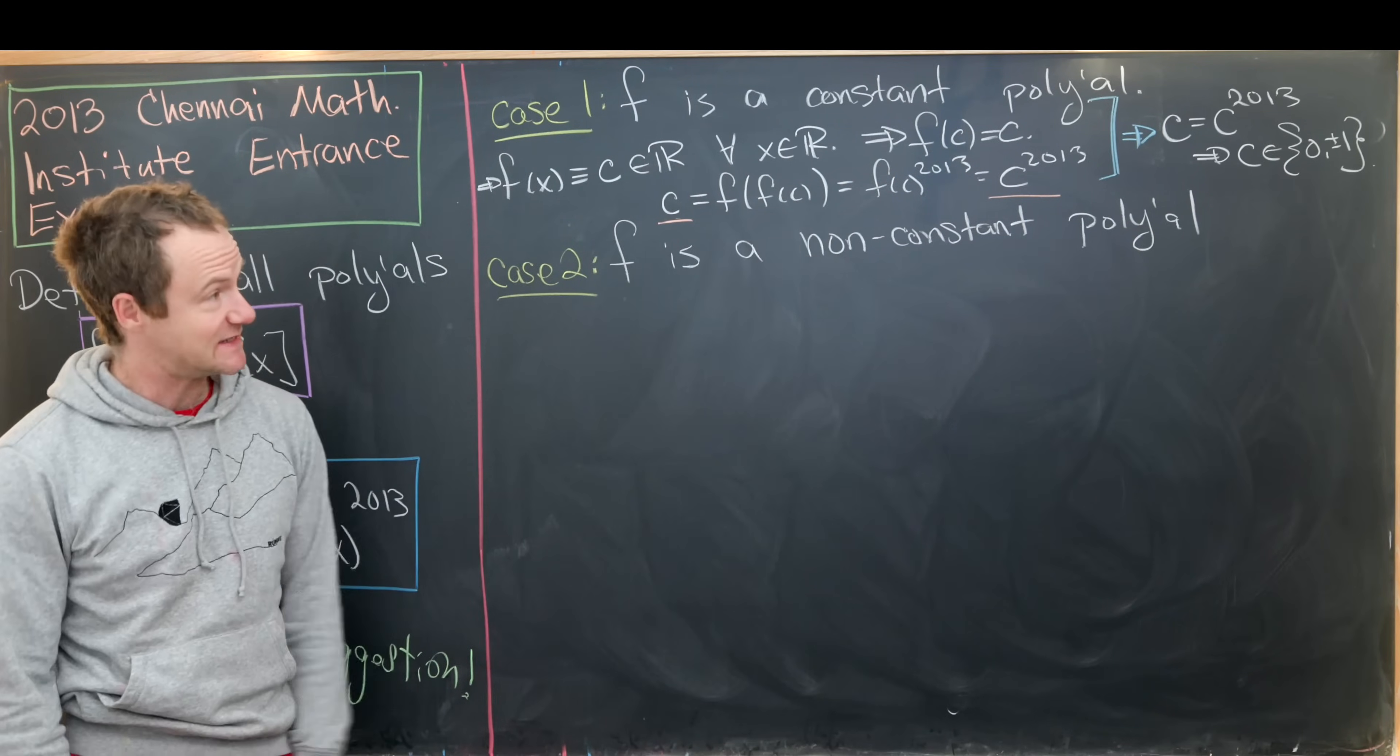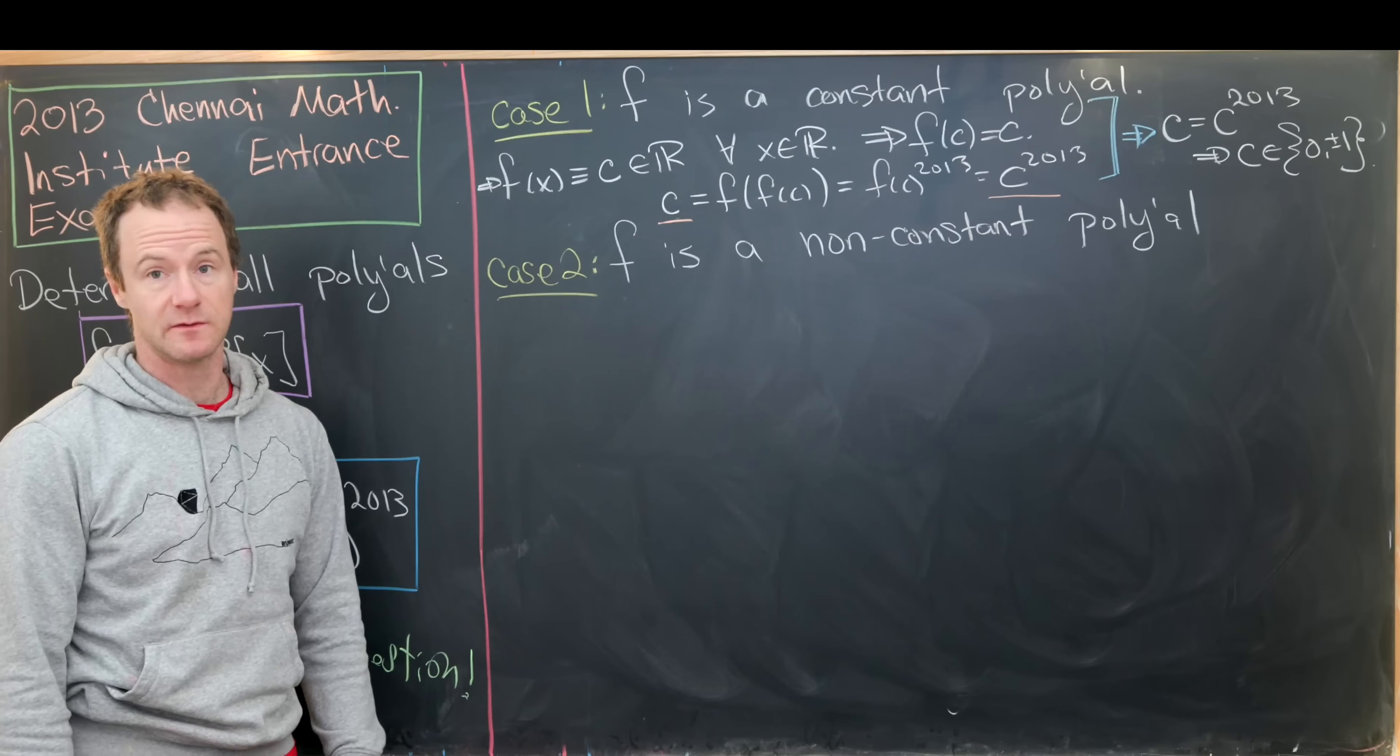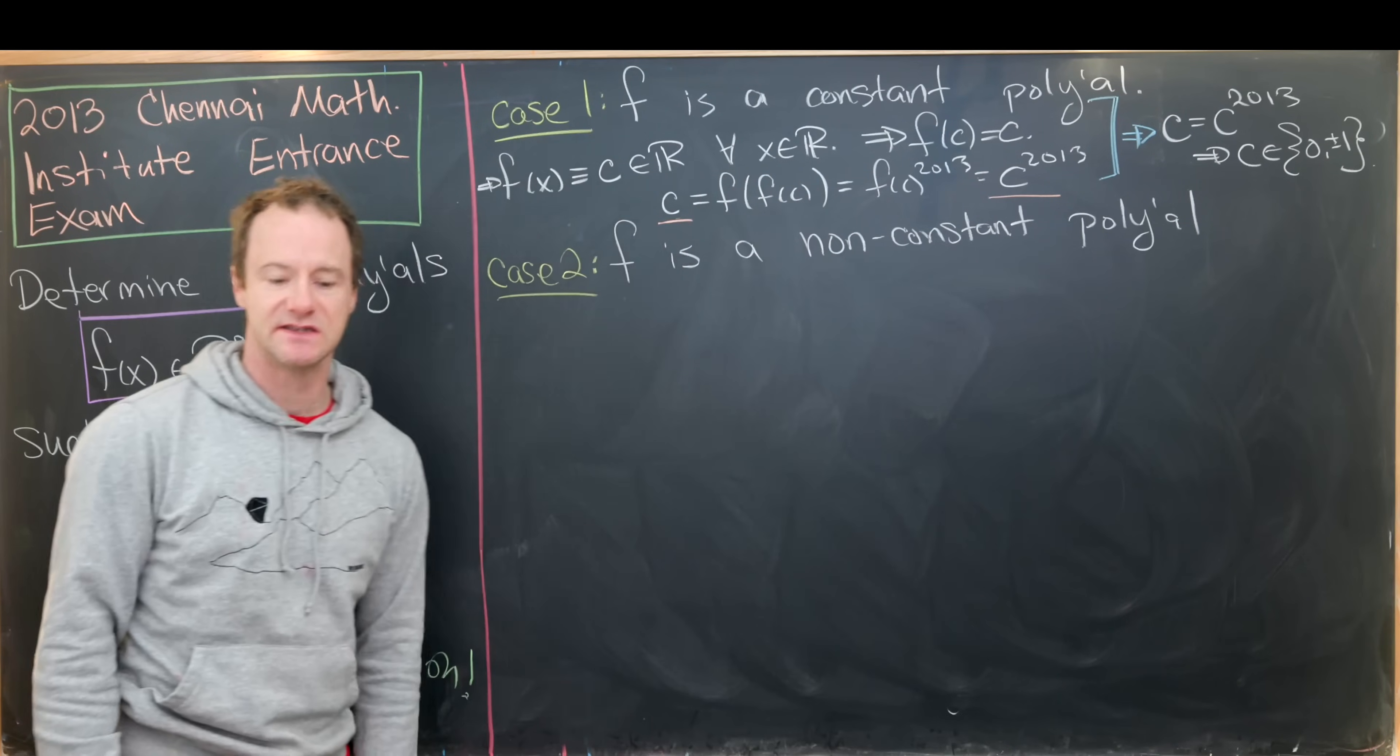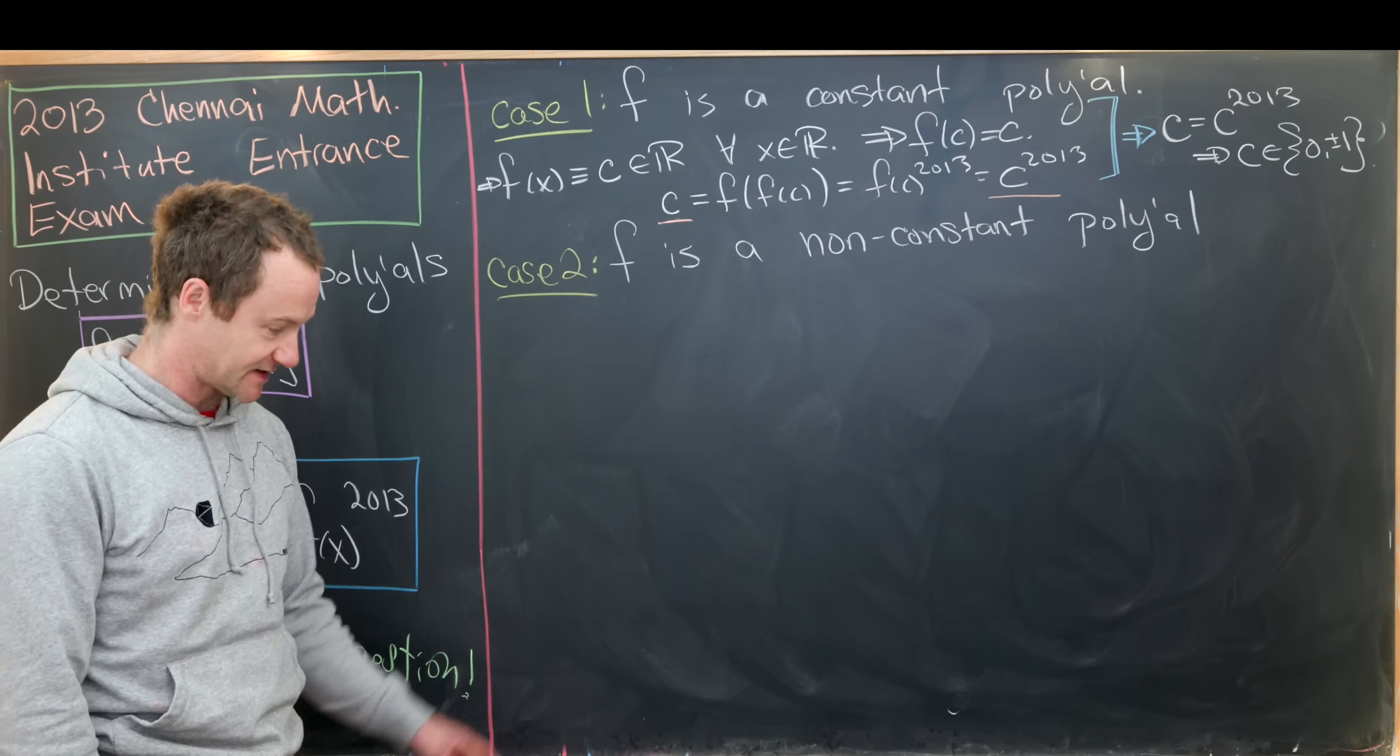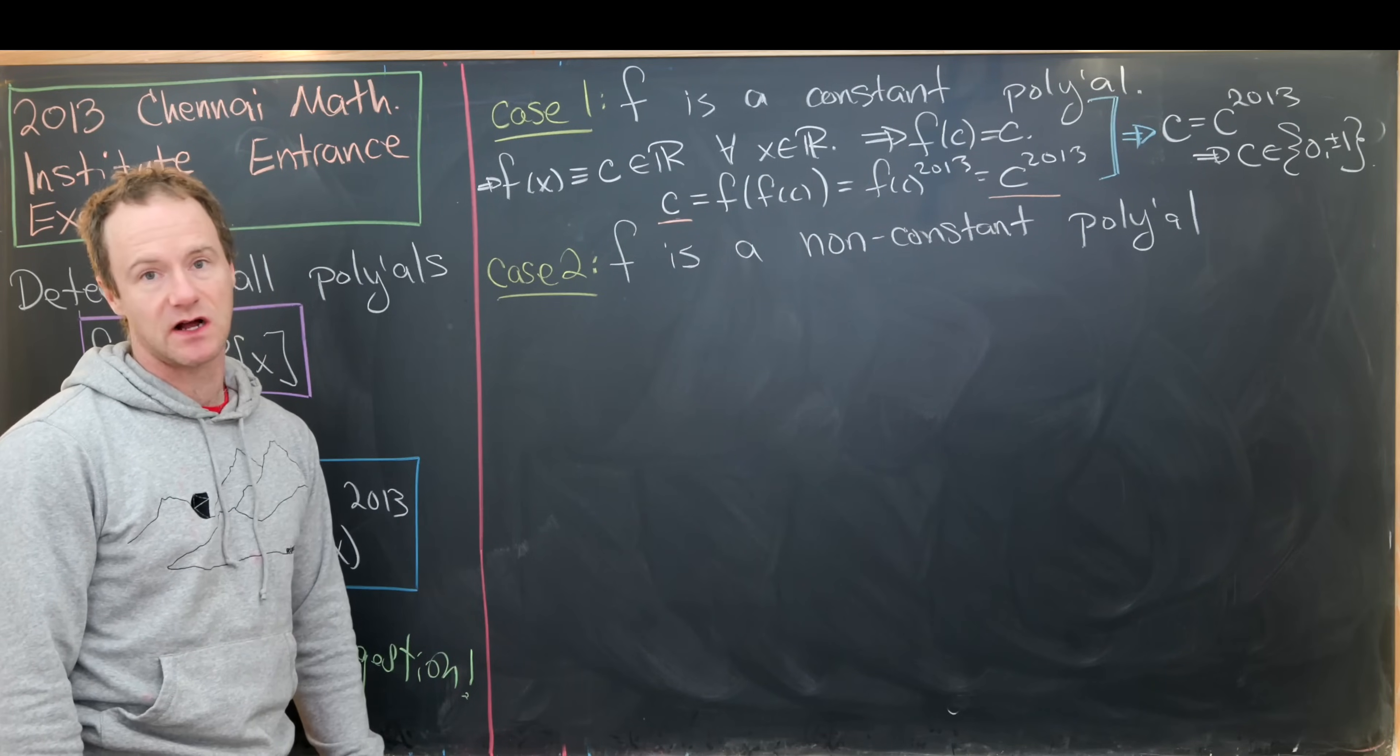So it is in general indeed possible for f to be a constant polynomial, but it can only be the constant polynomial which is identically zero, identically one, or identically minus one. Now that we've covered this first case, let's move on to the second where f is a non-constant polynomial.